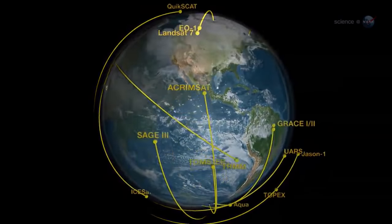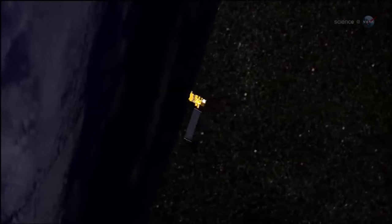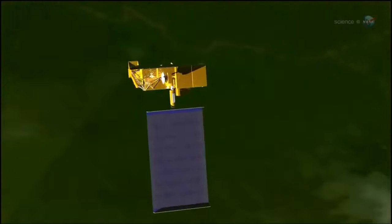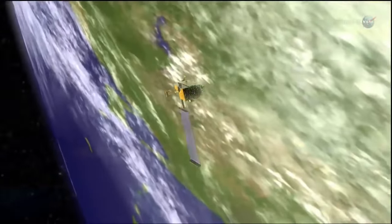On the one hand, extra drag helps clear space junk out of Earth orbit. On the other hand, it decreases the lifetime of useful satellites by bringing them closer to the day of reentry.